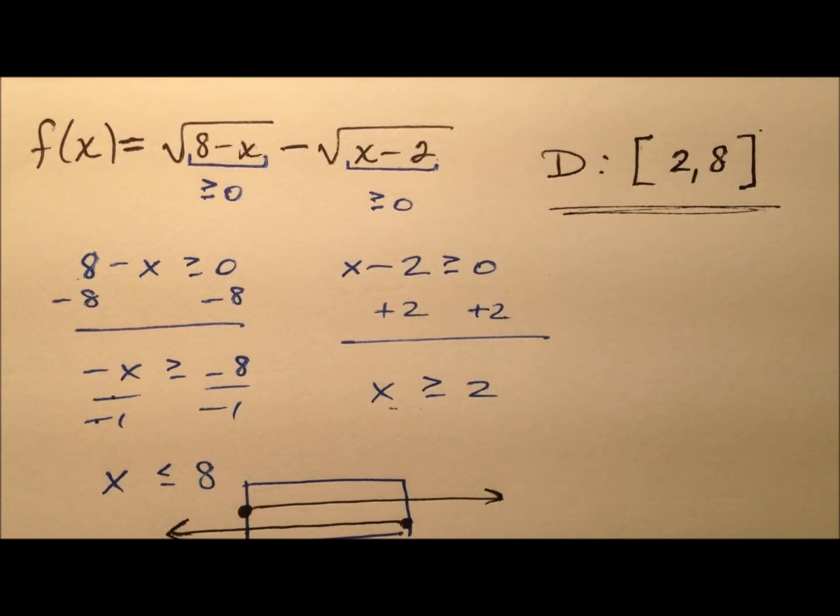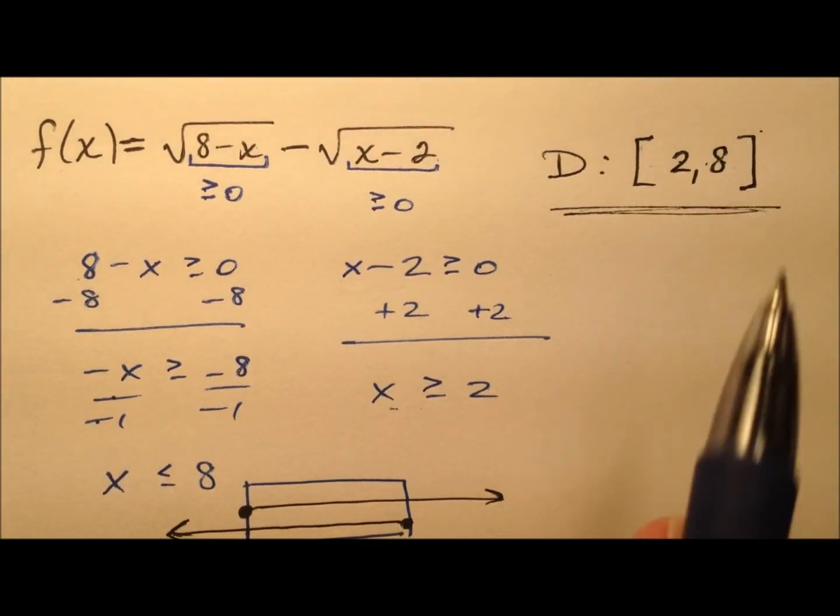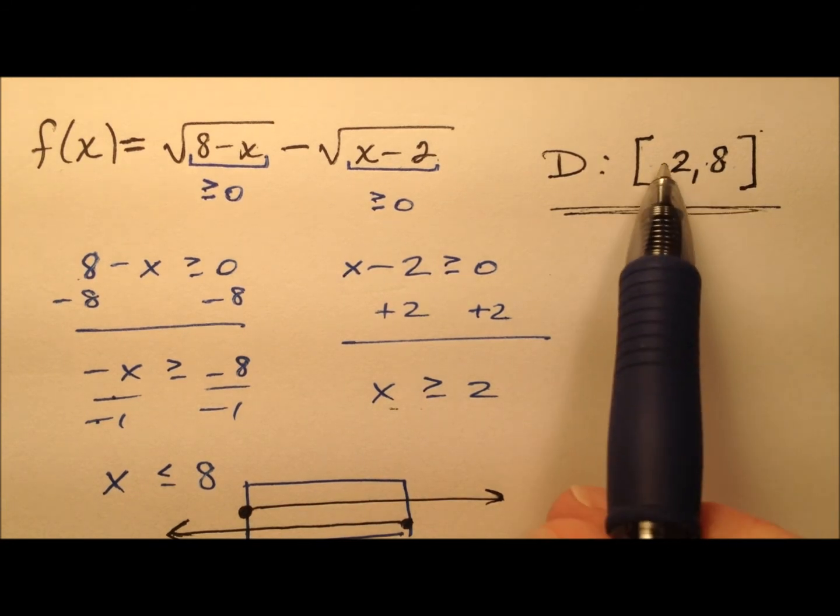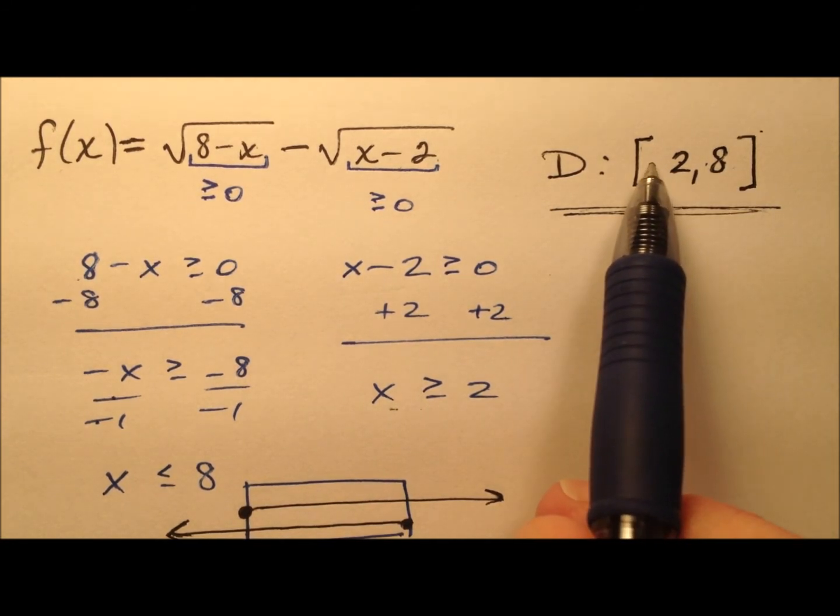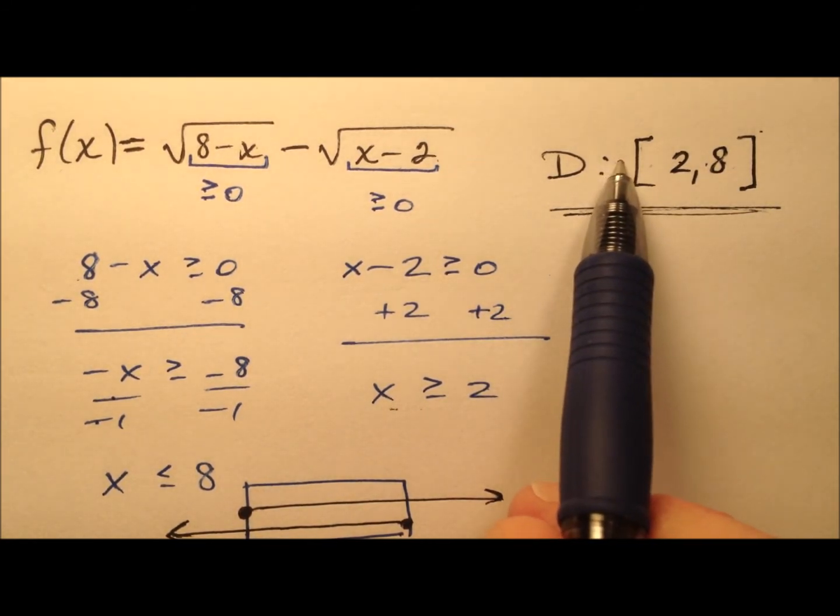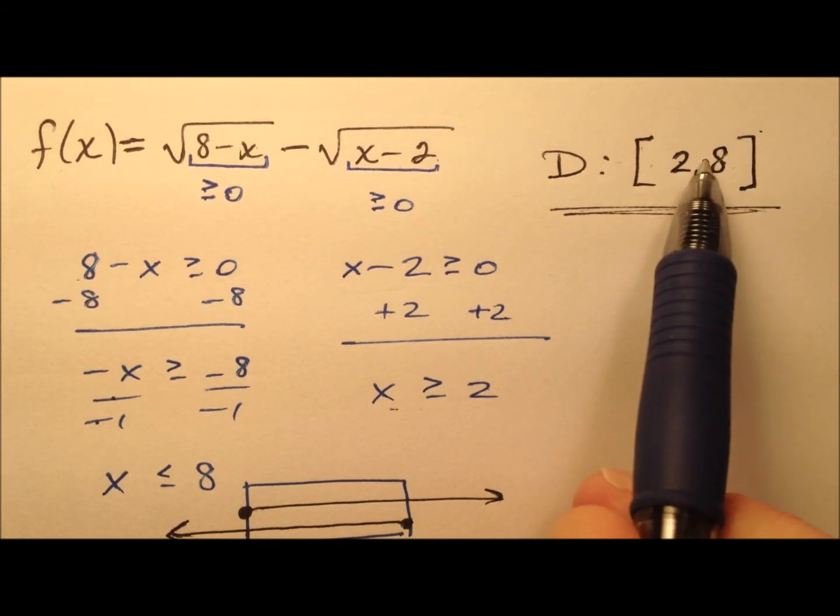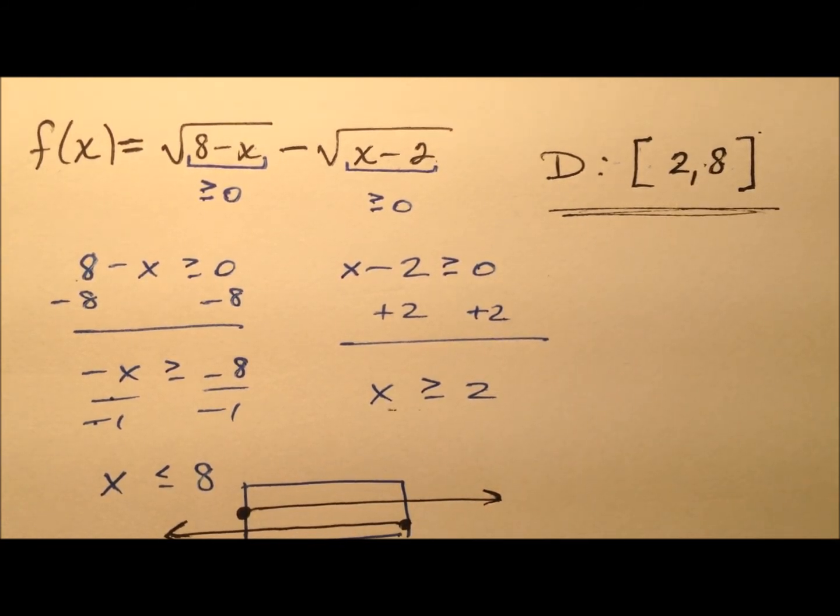Well, before we look at the graph, let's go ahead and just make sure numerically that this makes sense. So we'll try a couple of numbers here. We'll try 0, which is to the left. We'll try 10, which is to the right. And then we'll try 5 right in the middle. And we'll just see if these work out.